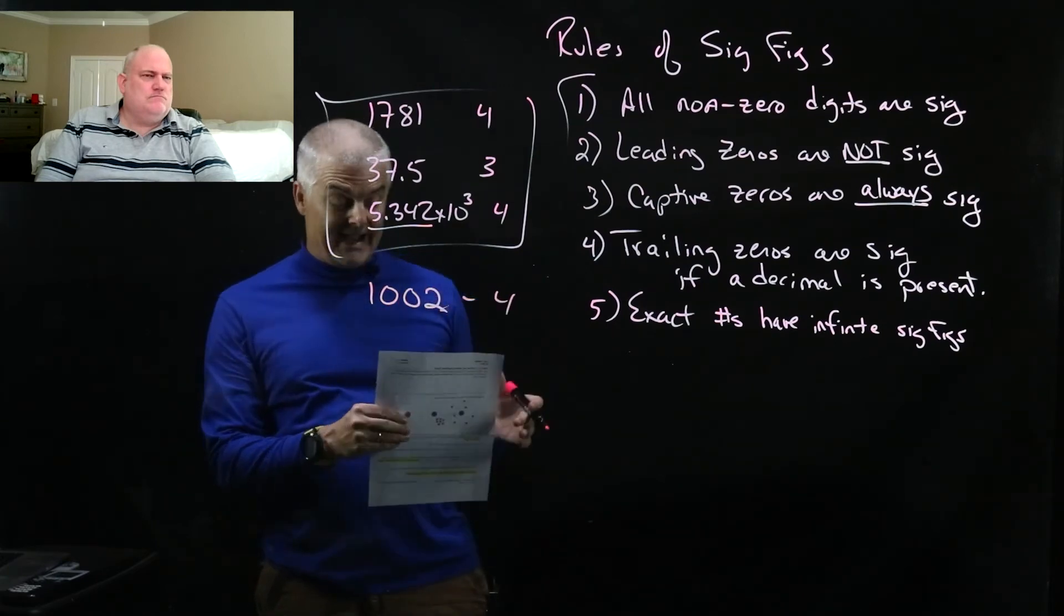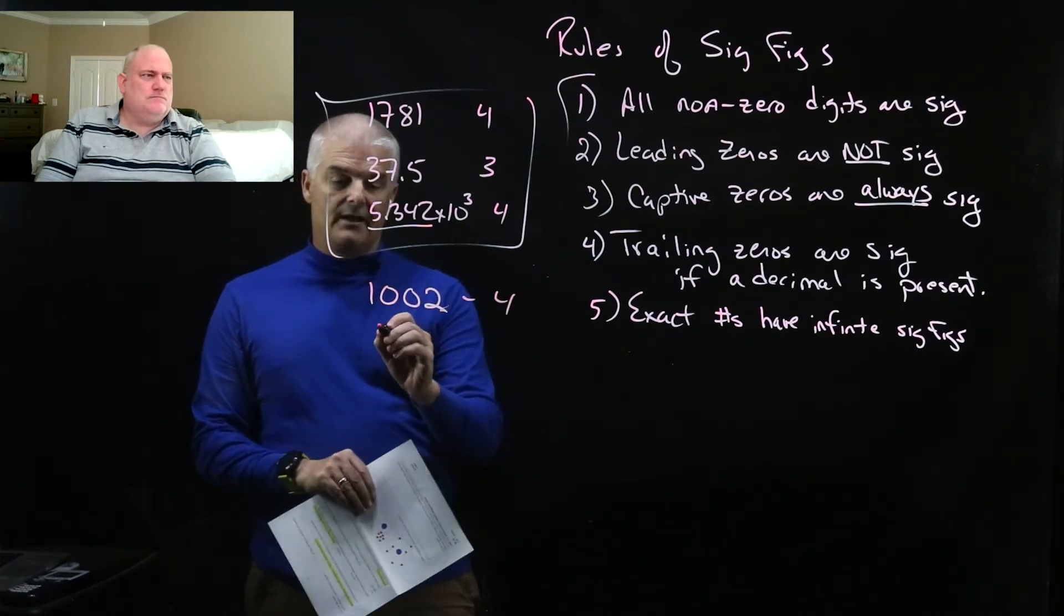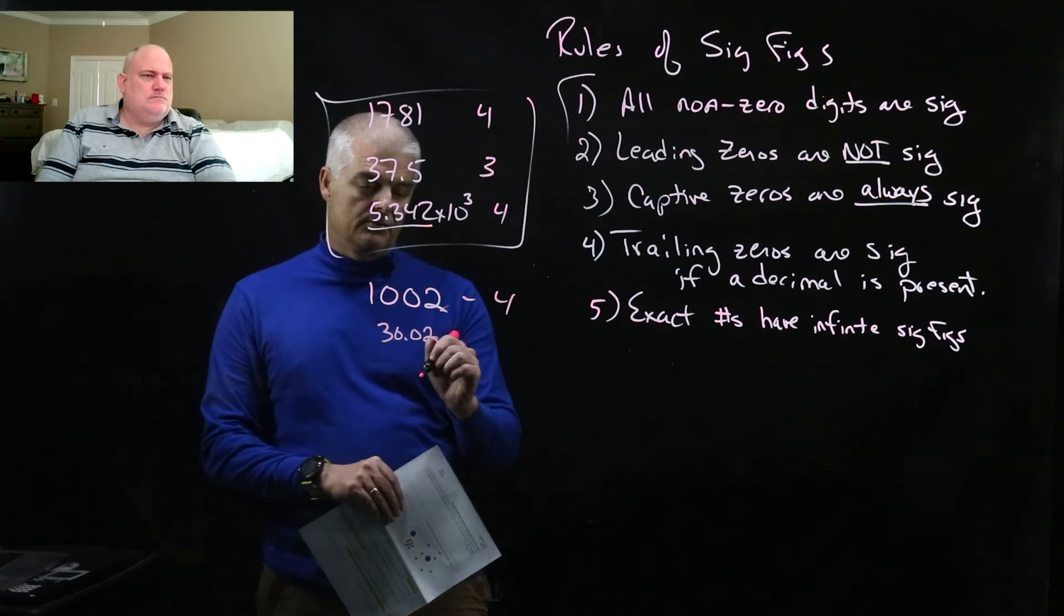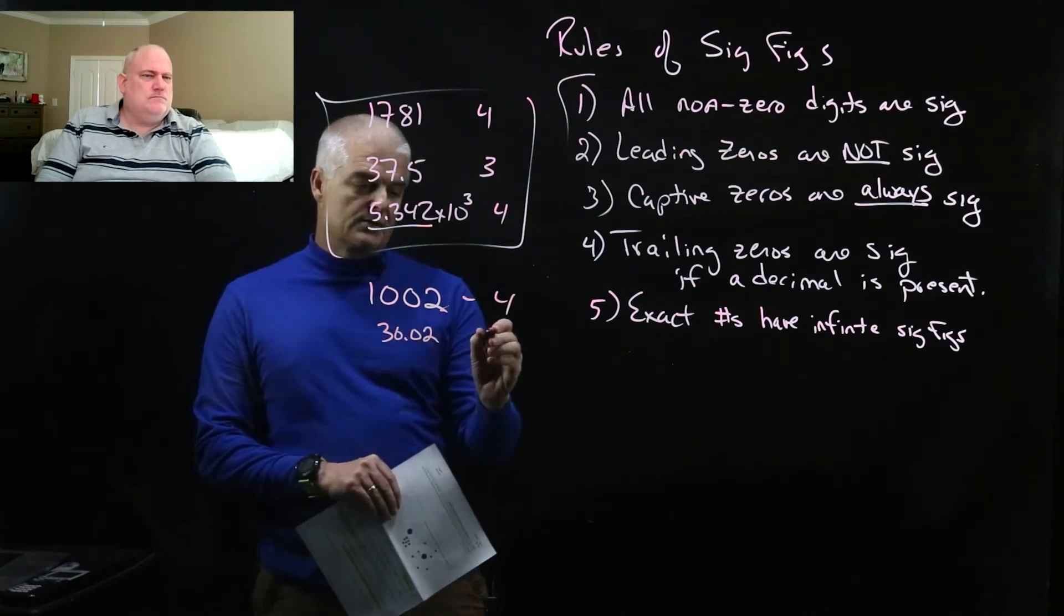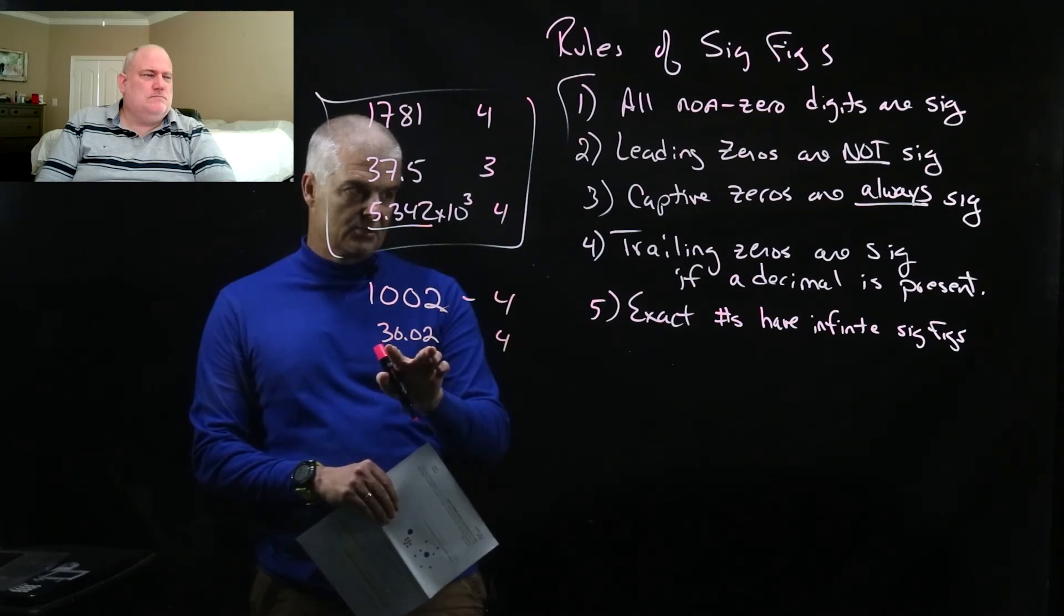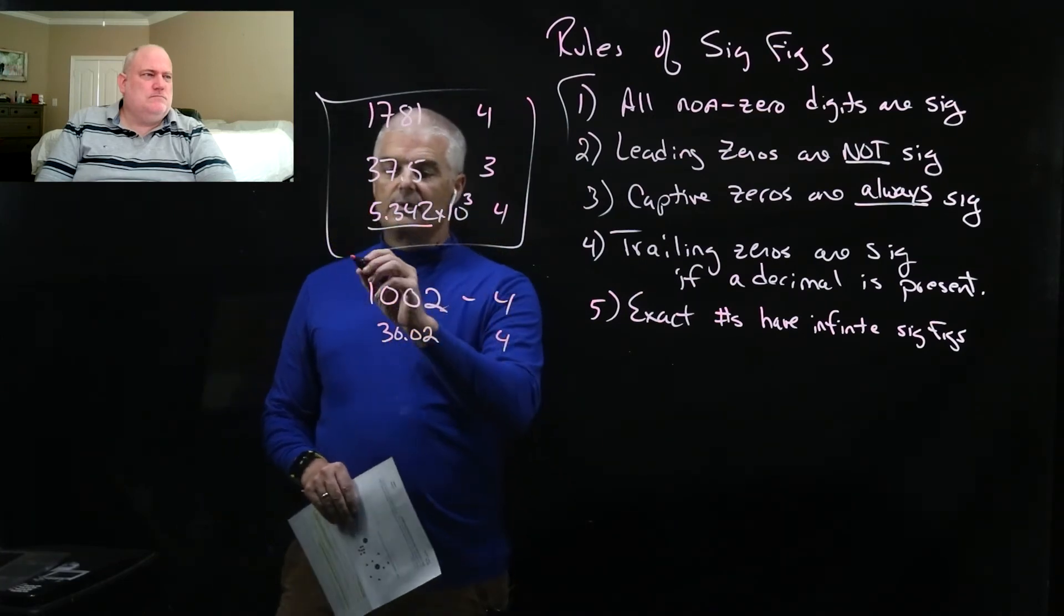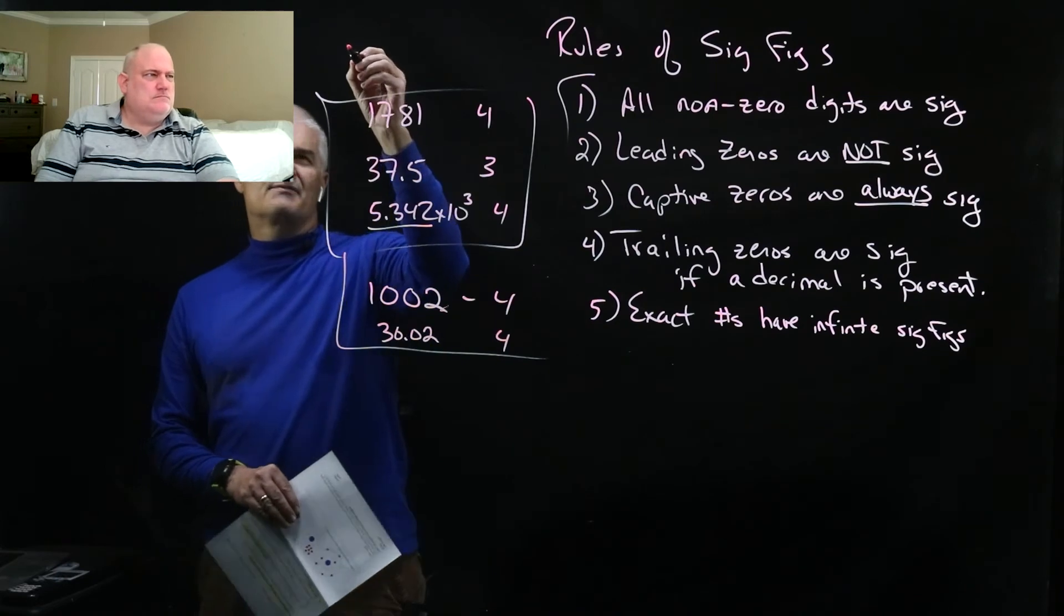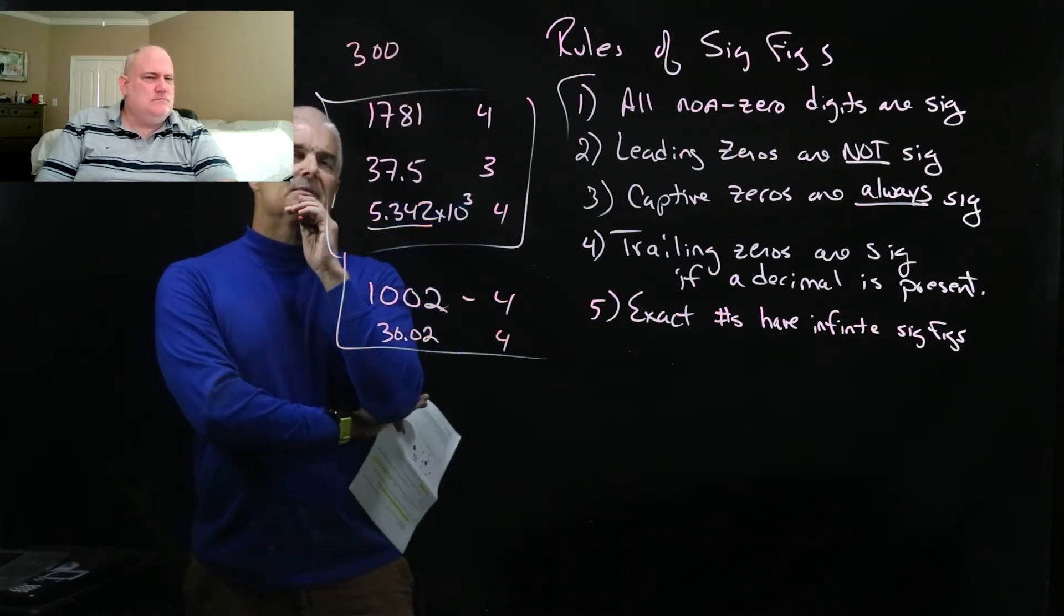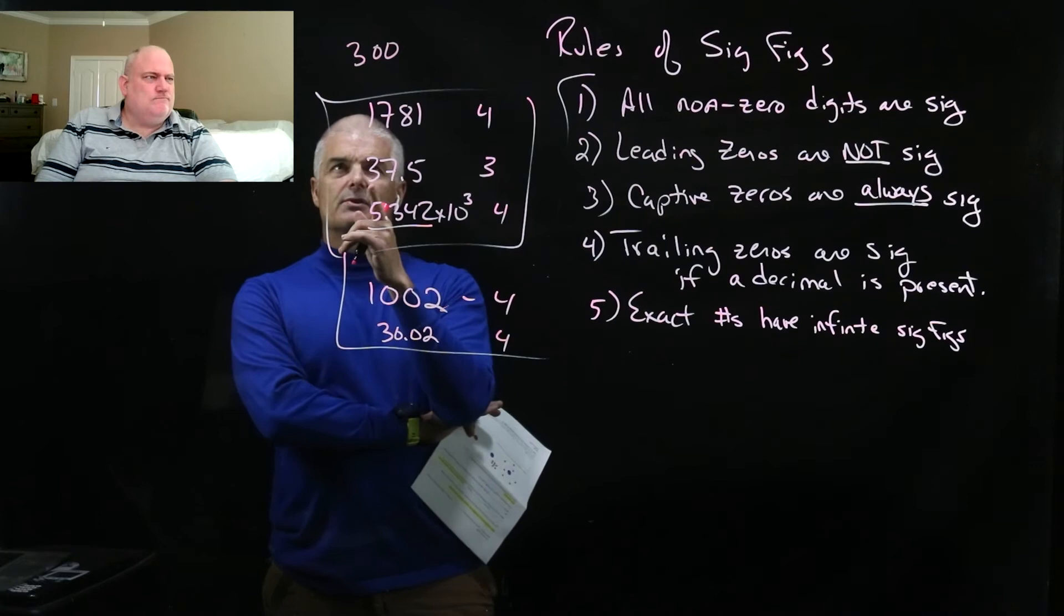Because those zeros count. Does that make sense? Or if I have 30.02, again, both of those zeros, that's a zero, is four as well, because those zeros are captured between the three and the two.